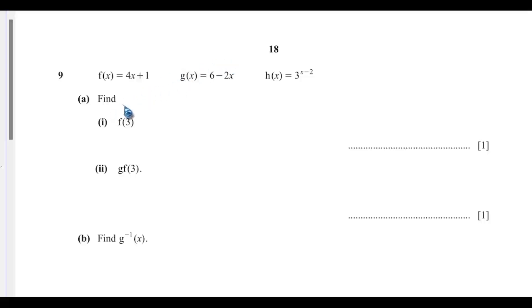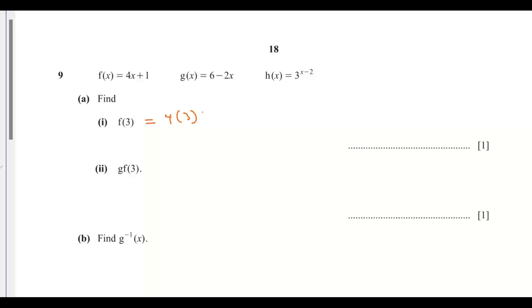We are given functions, so we have to find f(3). Just pass in 3 — anywhere we see x, we put 3. So f(3) equals 4 times 3 plus 1, which is 12 plus 1, and that is 13.